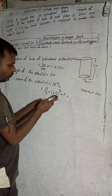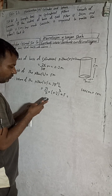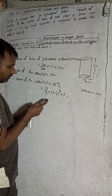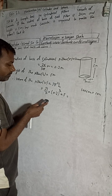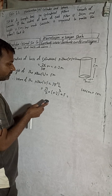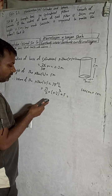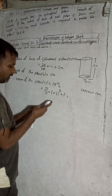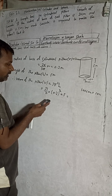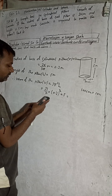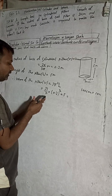Substituting the values: r² = 0.2 × 0.2 = 0.04. So volume = 22/7 × 0.04 × 5, then divide by 7.